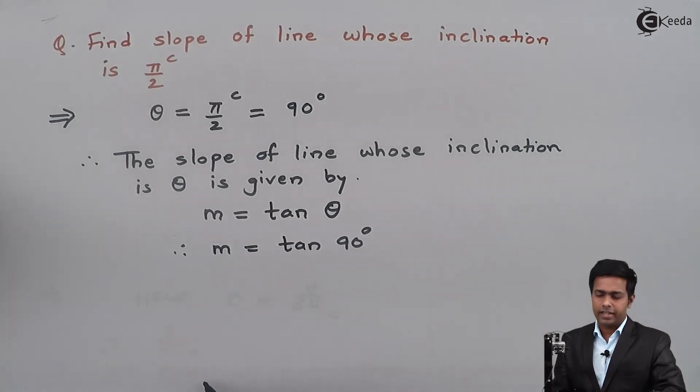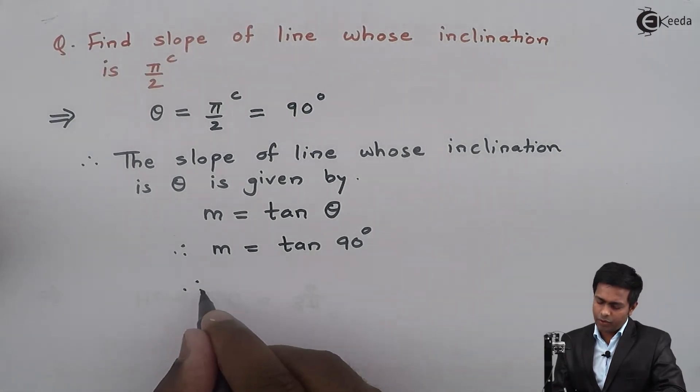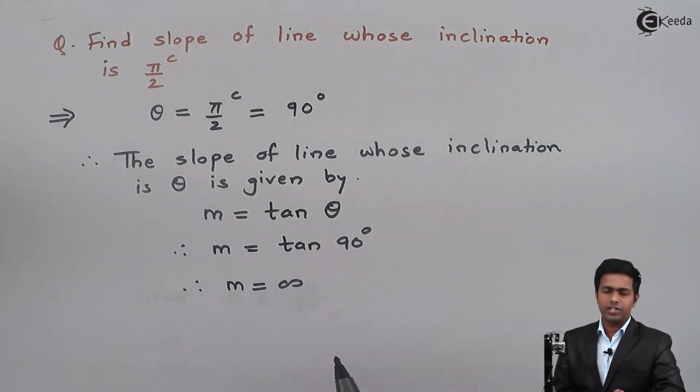We all know that tan π/2 radians or tan 90° is infinity, and therefore the slope is infinity. It is not defined.